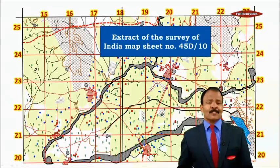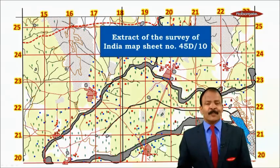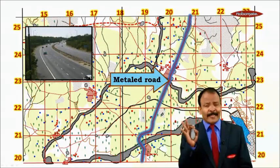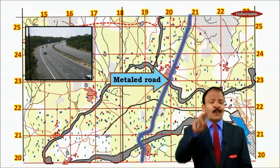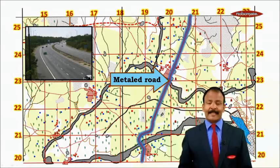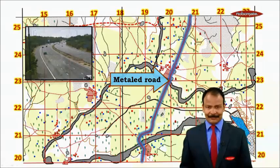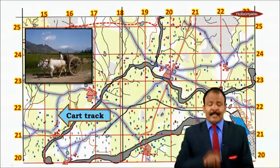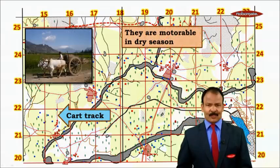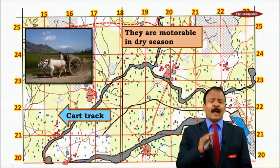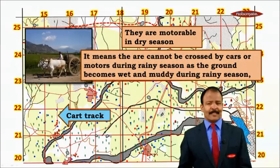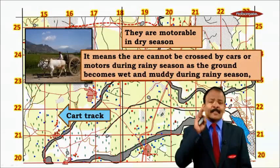A bridge is shown with its own symbol. This is a bridge with a fire symbol. This is an extract of the Survey of India map, sheet number 45D. There are different types of roads — whenever there is a double line red color line, it's a metal road; single red color lines are cart tracks.